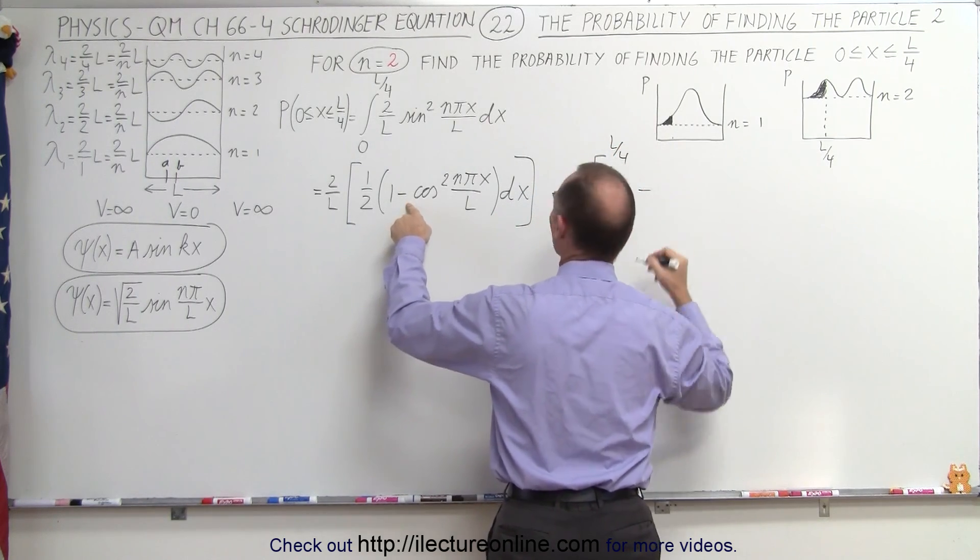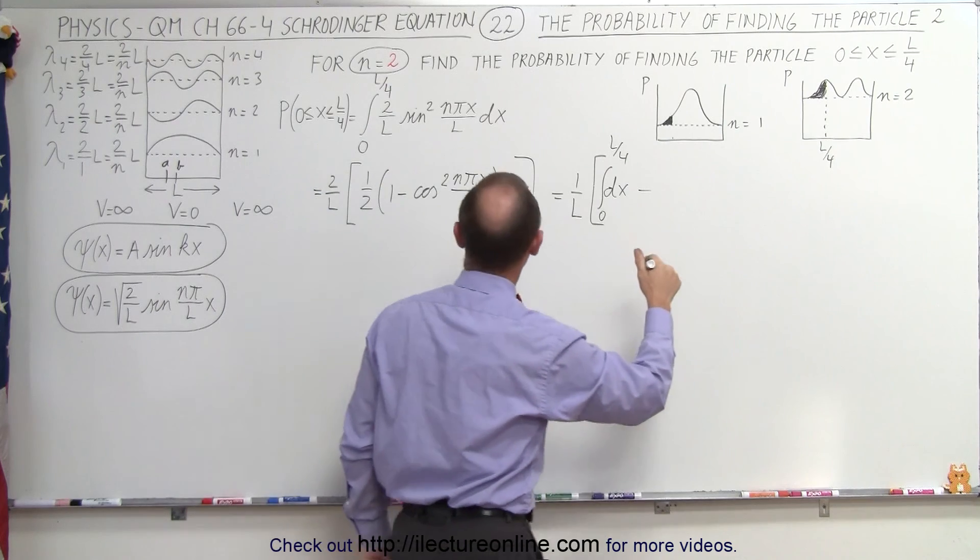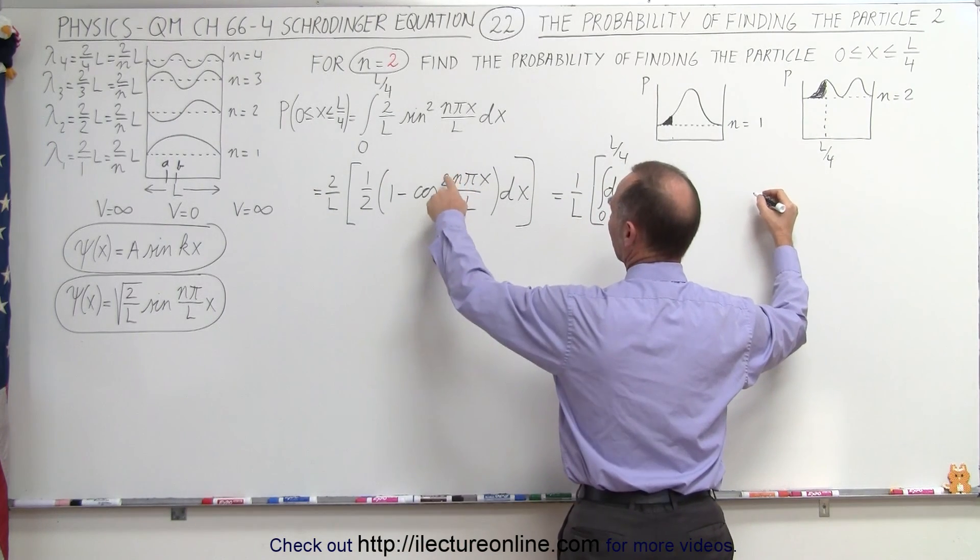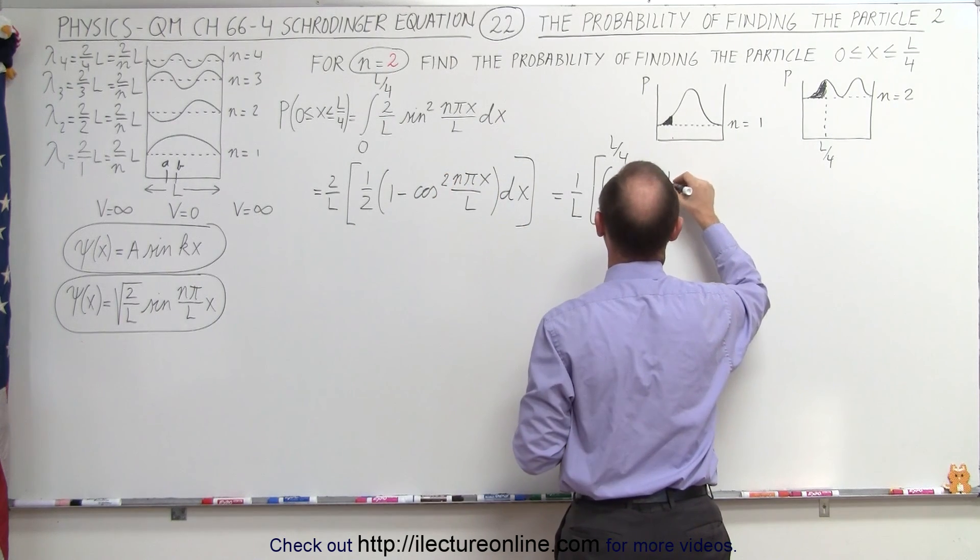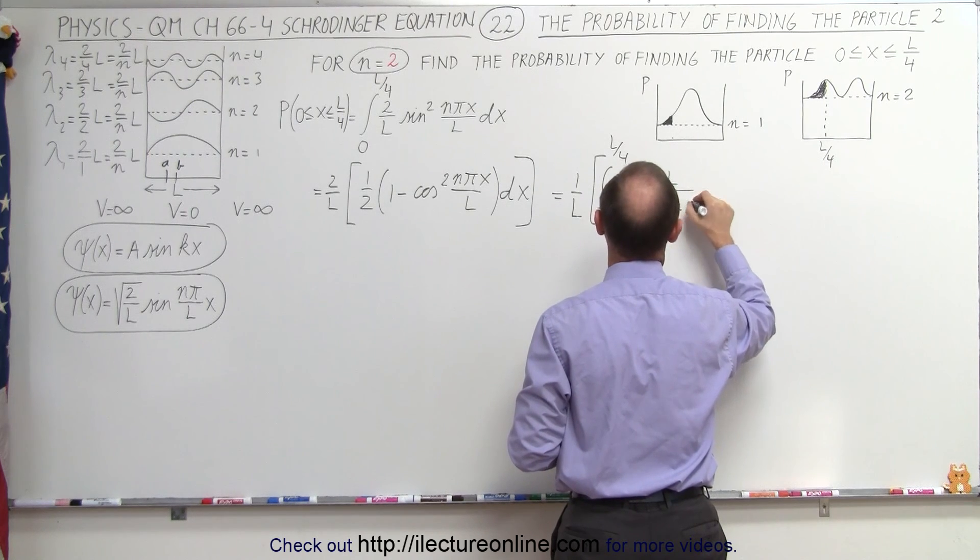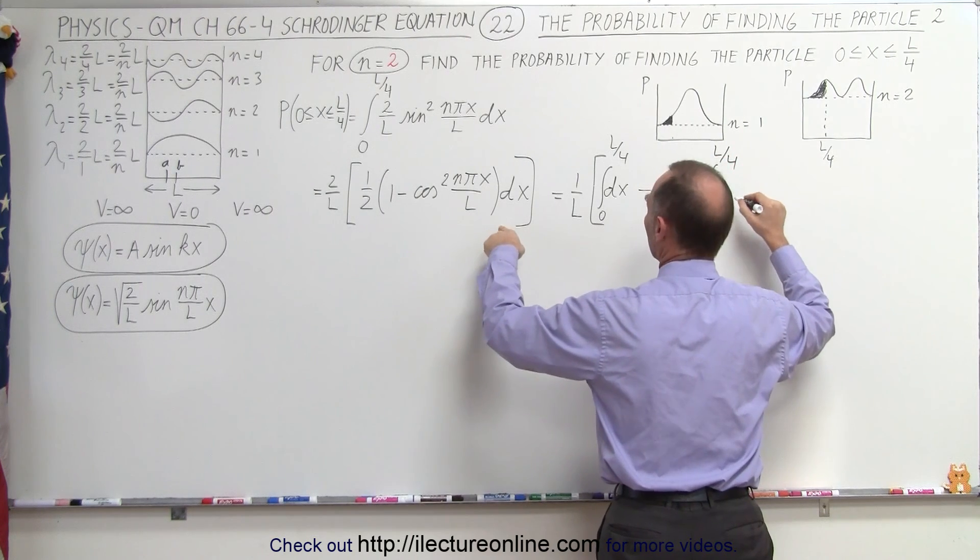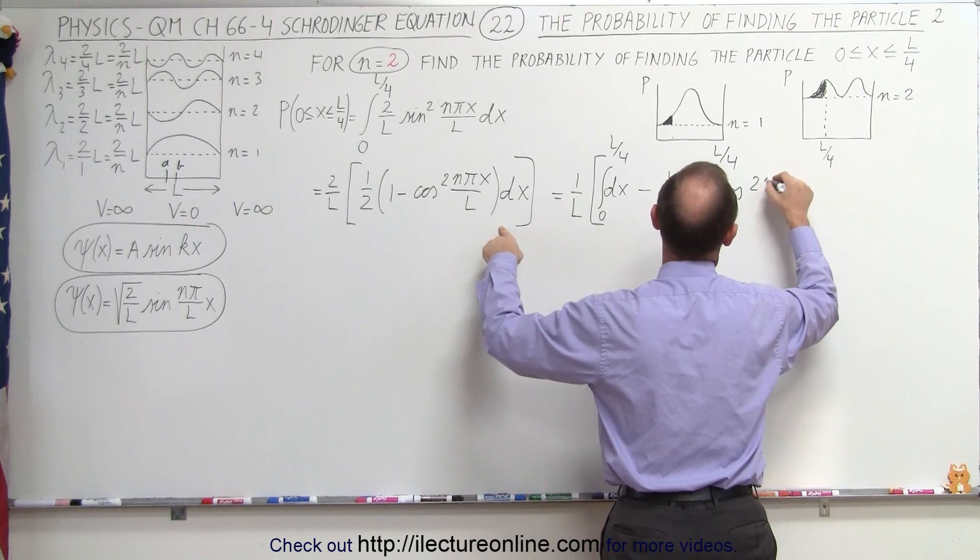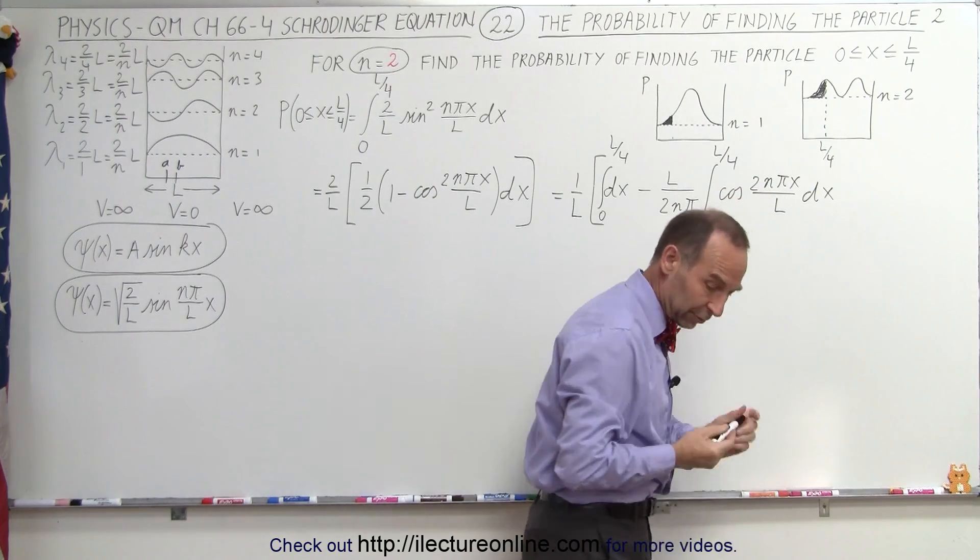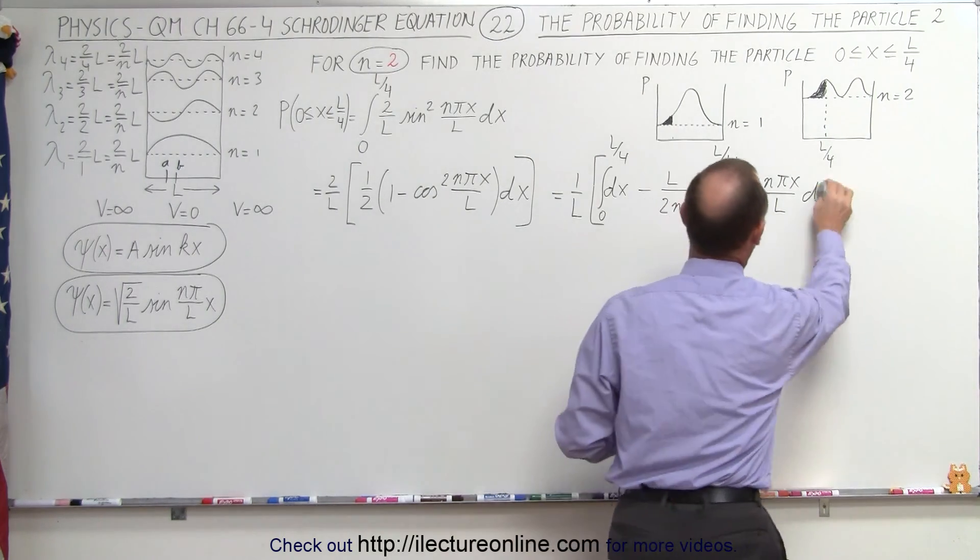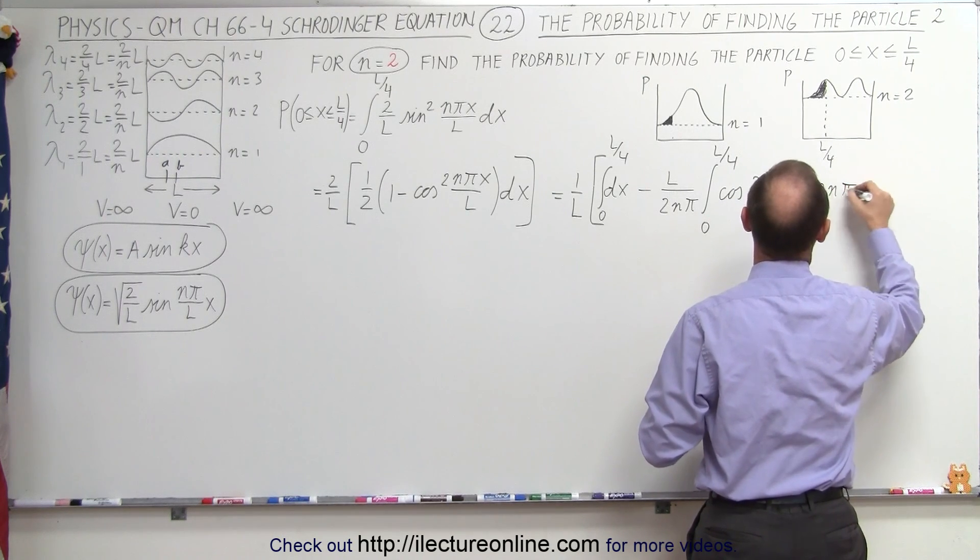This is equal to 2 n pi x times the integral from 0 to L over 4 of the cosine of 2n pi x over L dx. We don't have the proper differential there. I went through all this trouble so I would be able to write the following: 2n pi over L dx. Now I have the proper differential to integrate this particular function.